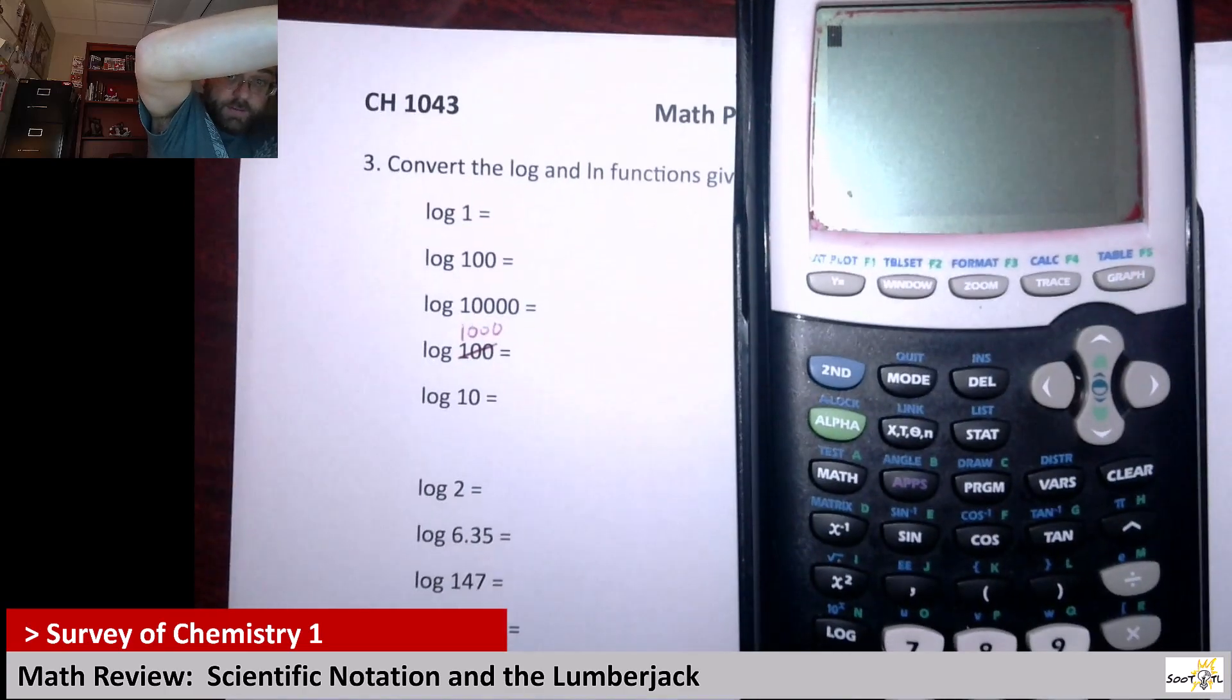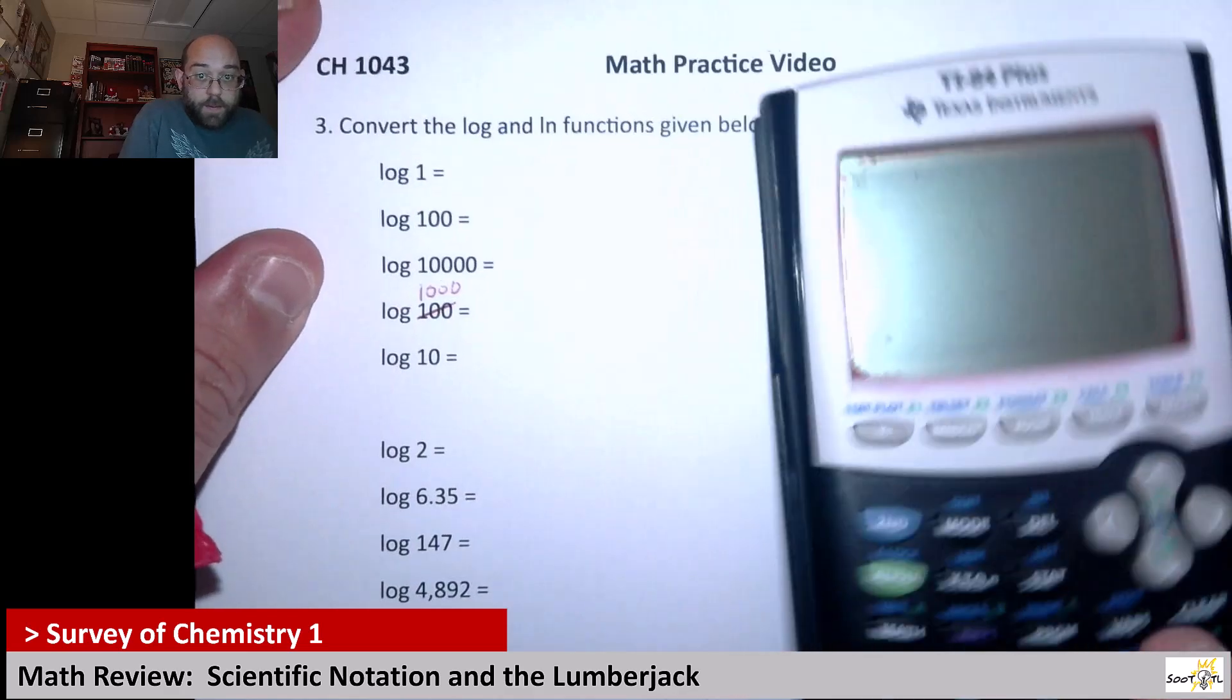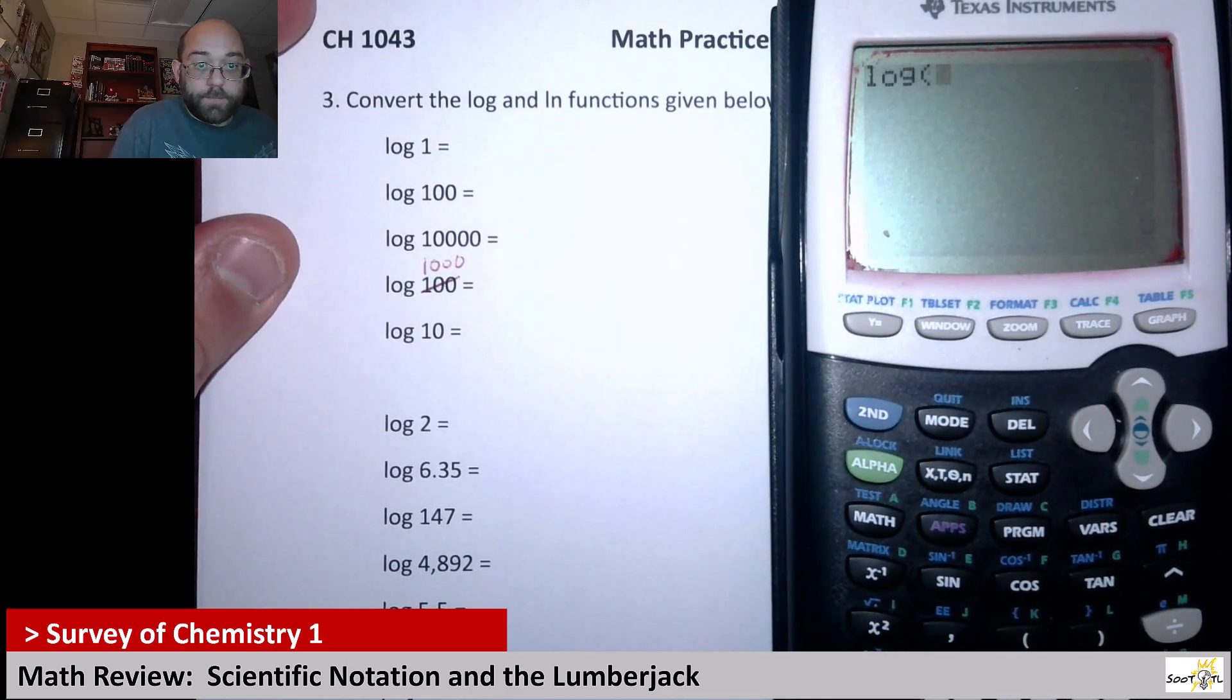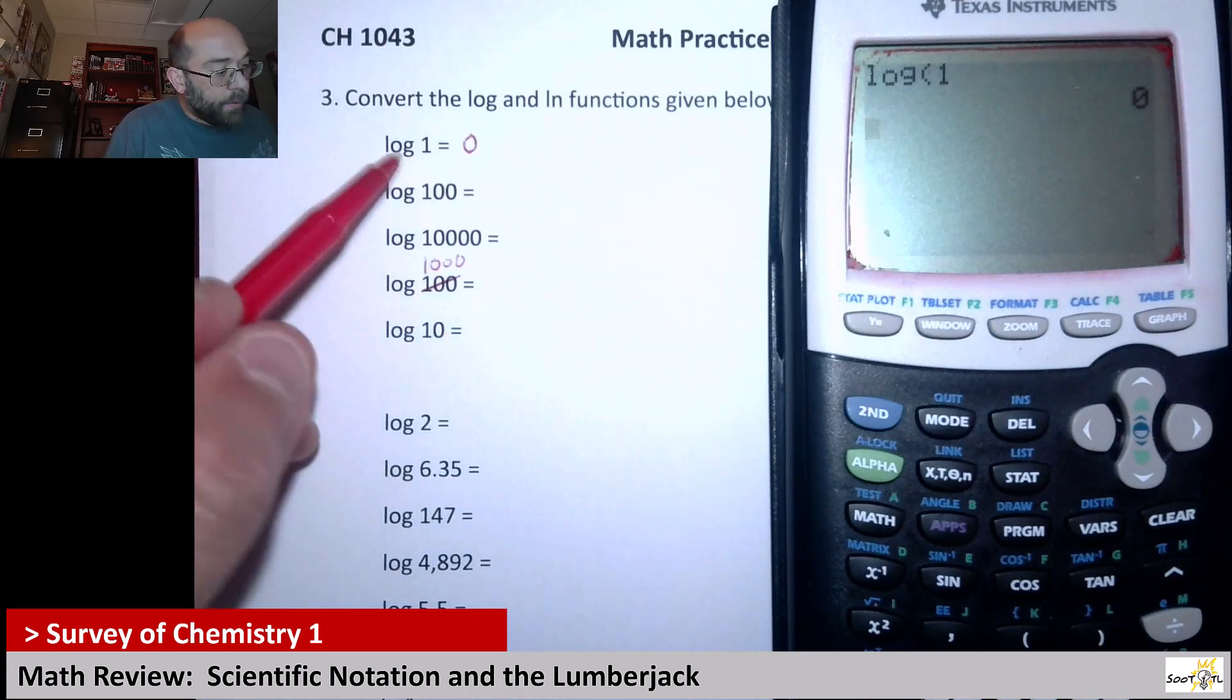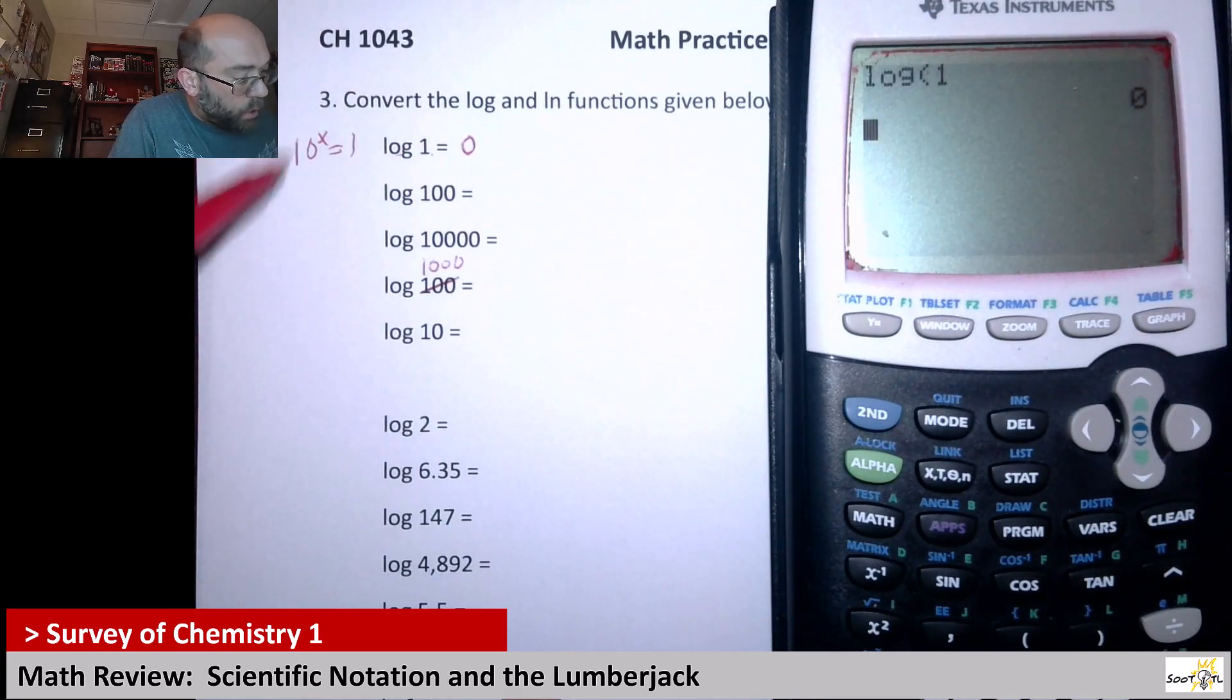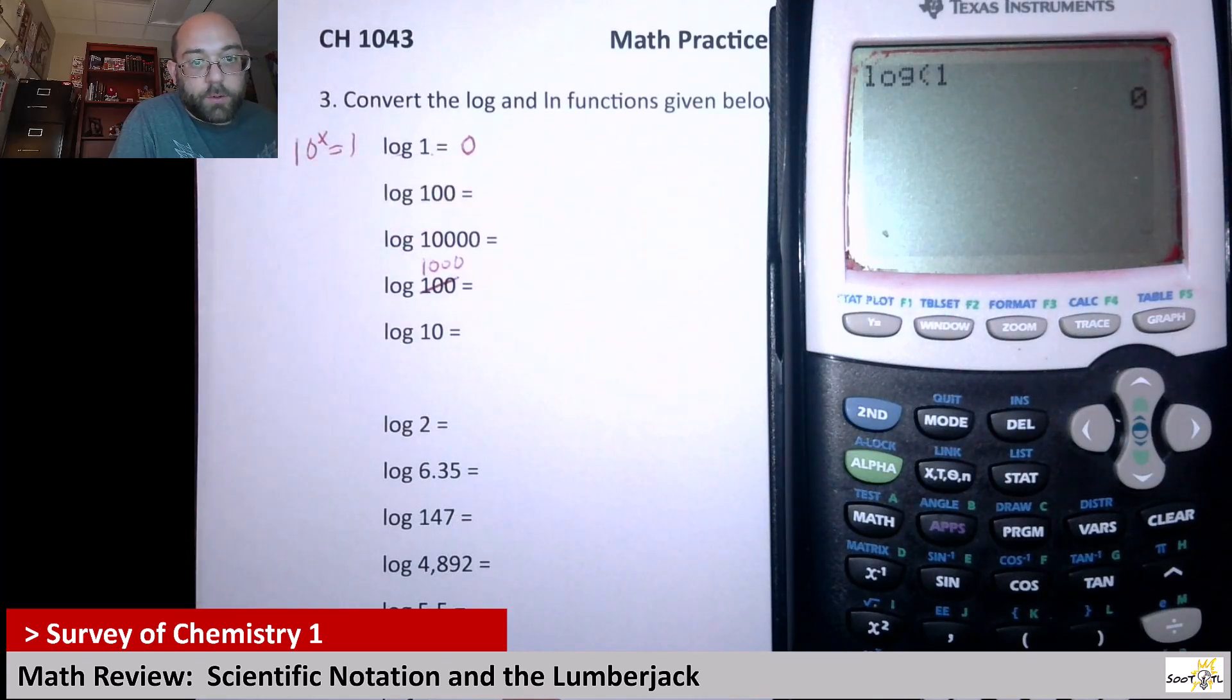So that means I'm going to have to hit log of 1. And you can close the parentheses or not on mine, but I don't have to. So the log of 1 is 0. Now, remember the opposite of log is 10 to the x. So when you're saying the log of 1, it's saying 10 to what power equals 1? And that makes sense, right? 10 to the 0 is 1. Any number to the 0 power is equal to 1.